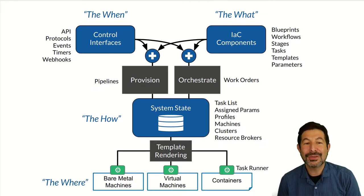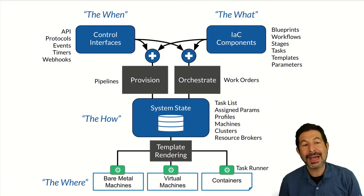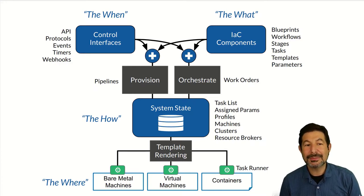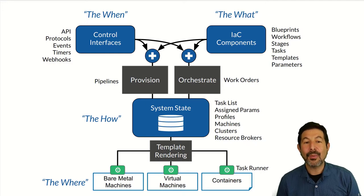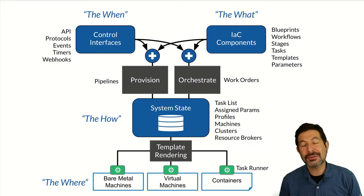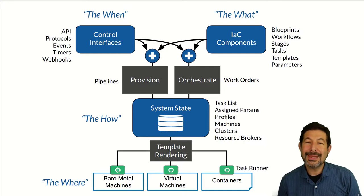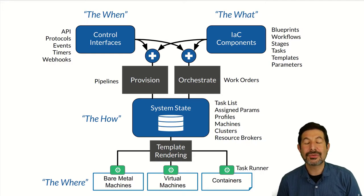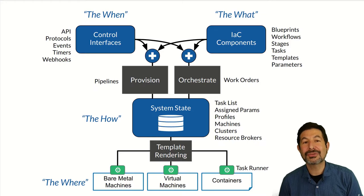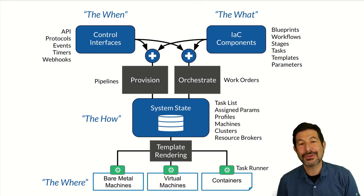Before I do, I want to walk through this slide specifically. For the when, we're talking about the controls interfaces that Digital Rebar offers, whether it's an API or protocols like PixieBoot, DHCP, or internal events and timers, or external webhooks. Those all determine when things happen and when things get initiated in Digital Rebar. But that is not sufficient because it's a platform with an automated control system. When you're asking Digital Rebar to do something, you have to be giving it a what, and the what are our infrastructure as code components. These are highly modular and reusable.